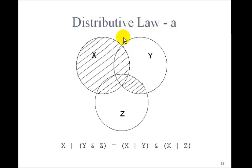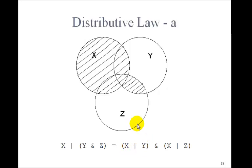You can prove these by looking at the Venn diagrams. Look at x OR (y AND z): y AND z is the overlap — this football. Add that to x and you get the total hatched area. Is that the same as the right-hand side? x OR y would be red — these two. x OR z would be green. The AND is the overlap of red and green, giving yellow — the same hatched area as the left-hand side.